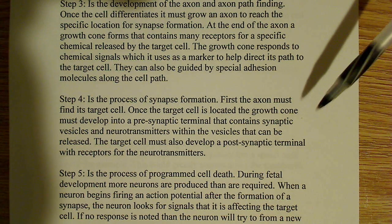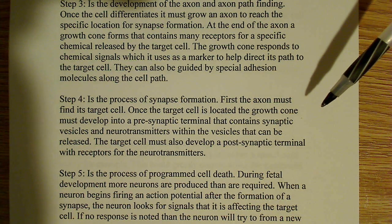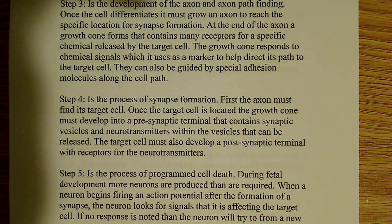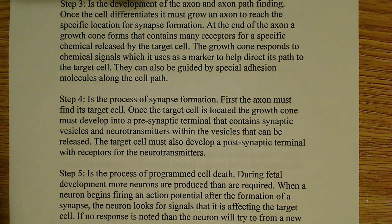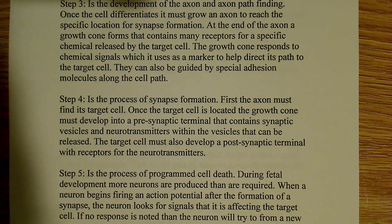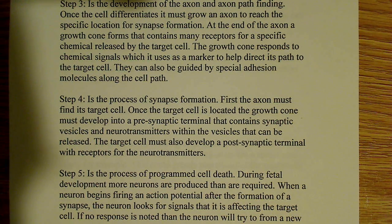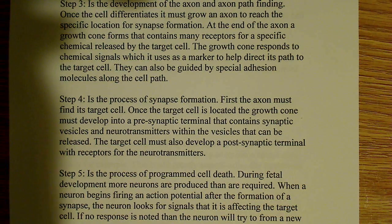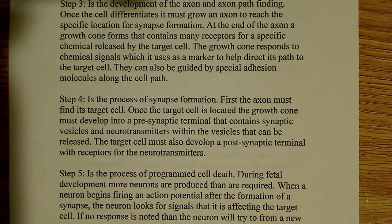The target cell must also develop into a postsynaptic terminal, because it must have receptors for that neurotransmitter. Whatever the target cell is, it has to have some way of responding to the chemicals released by the presynaptic terminal — released by the vesicles. That requires the formation of a postsynaptic terminal.